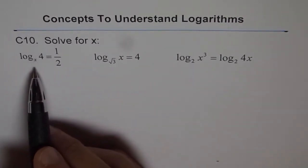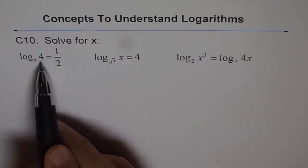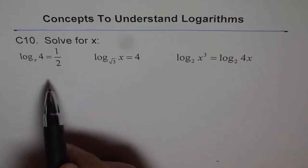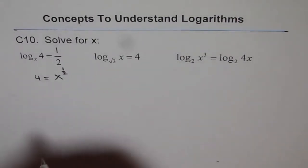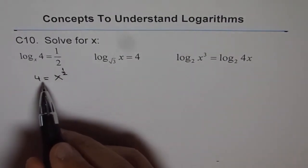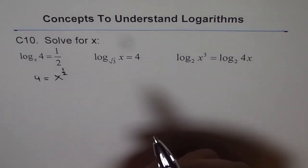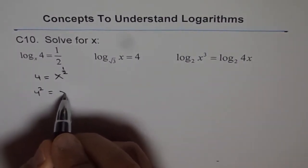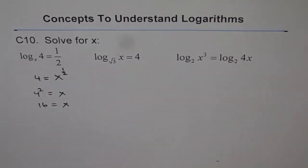The first one is log to the base x of 4 equals to half. This could be written in exponential form, and then you get 4 equals to x to the power of half. That gives you the solution for the first one, that is x equals to 4 squared. We can write this as 4 squared equals to x or 16 equals to x.